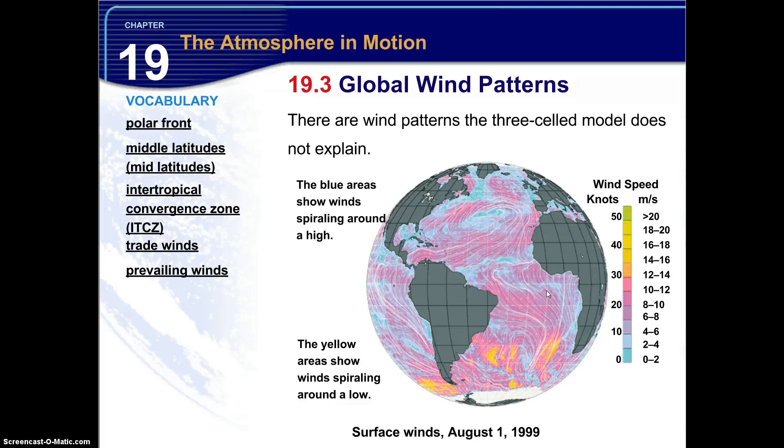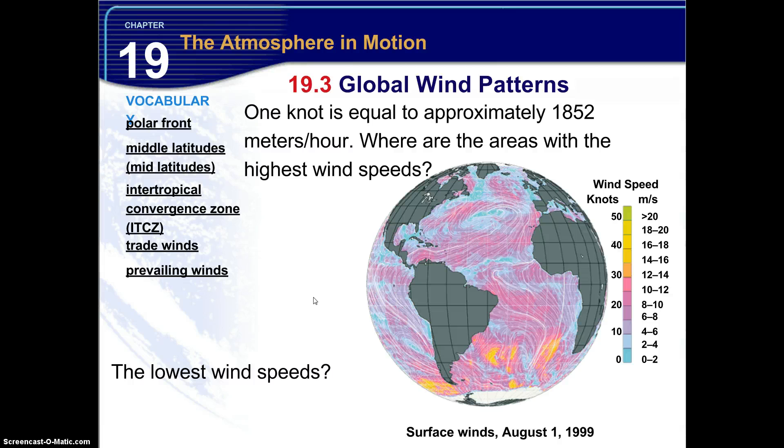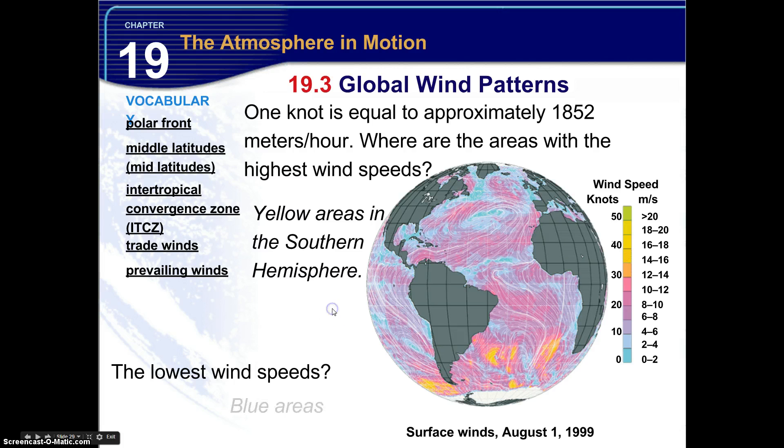Now there are wind patterns the three-celled circulation model does not explain. Here's an example of some surface winds that are not explained in the three-celled circulation model. Now looking at this model, you see that lower speeds are down here in the blue areas, and then higher speeds are in the green areas. So the blue areas show winds spiraling around a high-pressure system. You can see that right in here, up in here in the blue, down here in the southern hemisphere as well. The yellow areas show winds spiraling around a low-pressure system. You see right here near the 60-degree south latitude mark. There's a few little yellow ones up here as well, but most of them are down here in the southern hemisphere. So one knot is equal to about 1852 meters per hour. Where are the areas with the highest wind speeds? The yellow areas in the southern hemisphere. Very good. The lowest speeds will be in the blue areas.